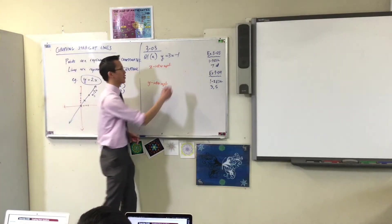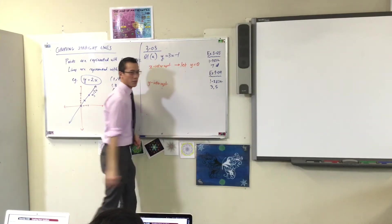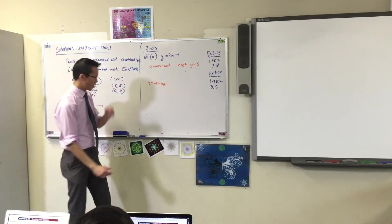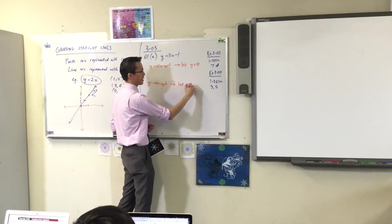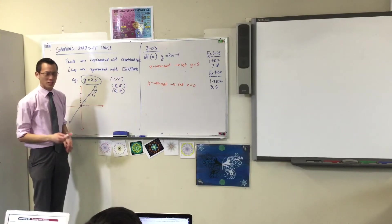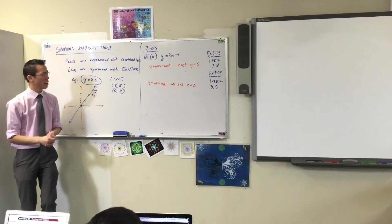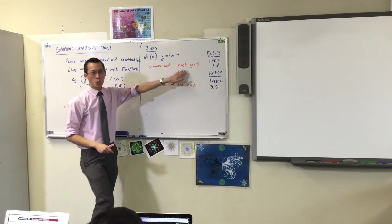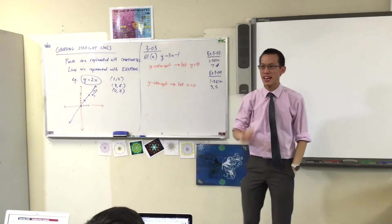So in order to find each of these, to find the x-intercept, you let y equal 0. And to find the y-intercept, you let x equal 0. That's a bit weird. That's backwards. Students often confuse this. Just look at them one at a time. The x-intercept, why do you let y equal 0? What does y equal 0 have to do with the x-intercept?